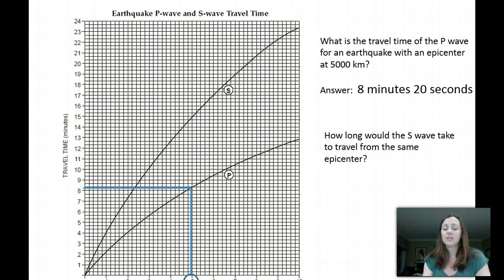Now the next question says, how long would the S wave take to travel from the same epicenter? So let's look at this again. We have the 5,000 mark, and we went up to the P wave. Let's continue up to the S wave. Okay, and now let's go over, and we see that it's just under the 15-minute mark, which means it's 14 minutes and 40 seconds. So the answer is 14 minutes and 40 seconds.